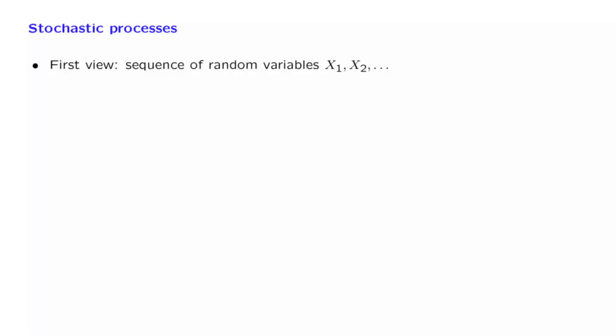A stochastic process can be thought of as a sequence of random variables. How is this different from what we have done before, where we have dealt with multiple random variables? Well, one difference is that here we're talking about an infinite sequence of random variables.